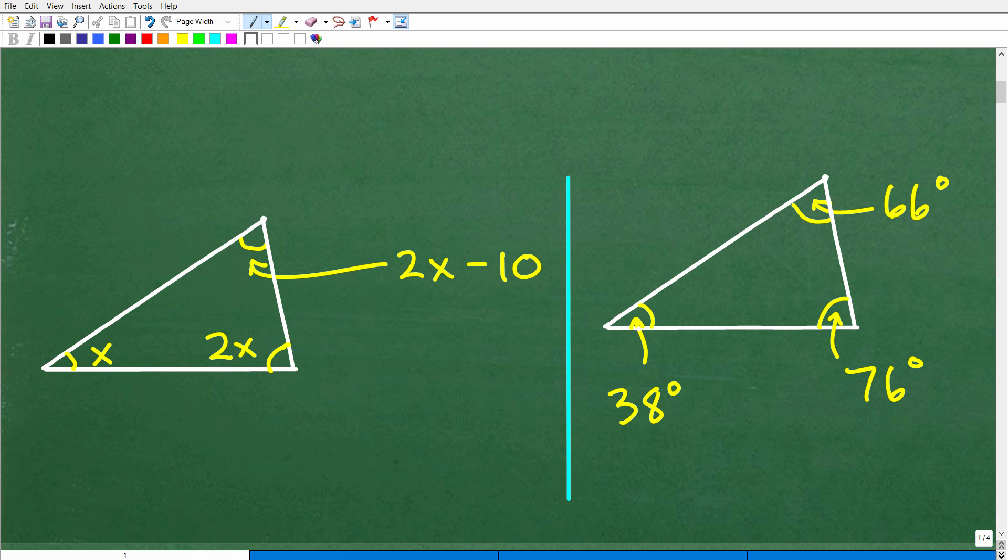So here is the problem. This angle in the triangle is 38 degrees. This angle over here is 76 degrees. And this angle up here is 66 degrees.